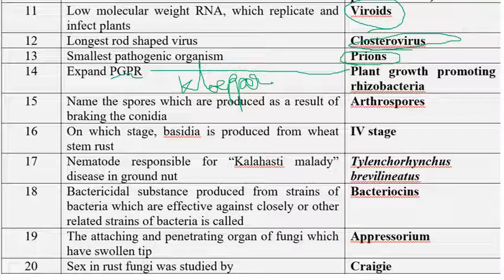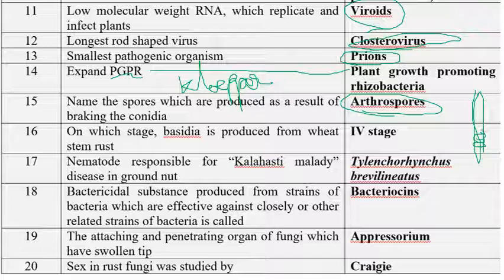The next question: name the spores produced as a result of breaking of conidia. Arthrospores or oidia spores are produced when conidia break into small fragments. These small broken conidia pieces are called arthrospores, otherwise known as oidia spores.